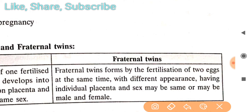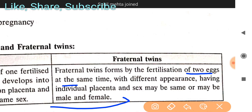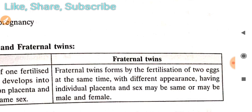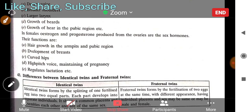Fraternal twins are formed by the fertilization of two separate eggs at the same time. They have different appearances, have separate placentas, and their sex may be the same or different — they can be both boys, both girls, or one of each.